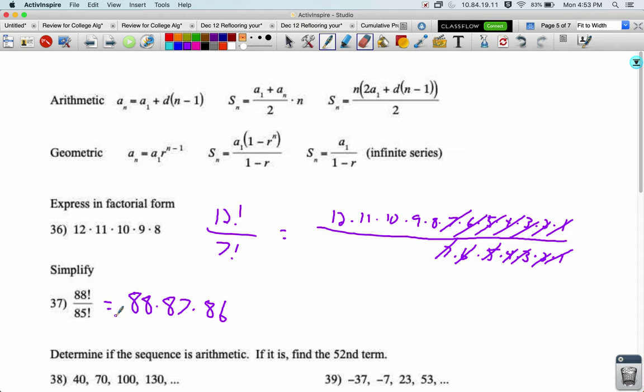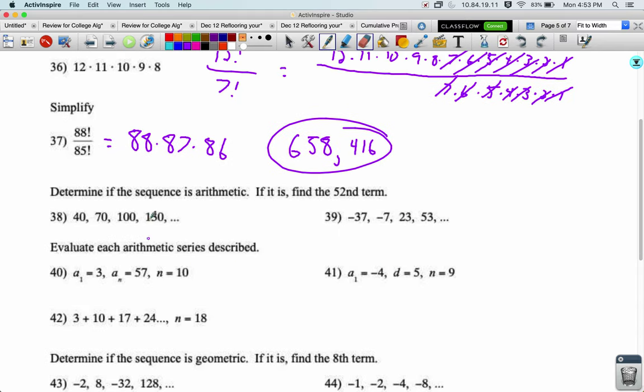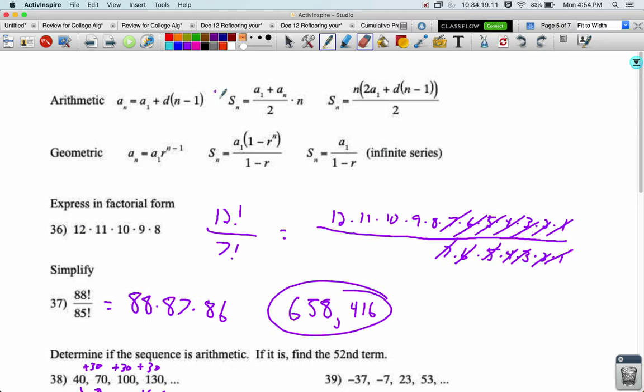To determine if something is arithmetic, we're looking for a constant difference. To get from 40 to 70 we plus 30. Let's see if we plus 30 again, yes it does work, so this is yes arithmetic. We can use this formula to find any term.